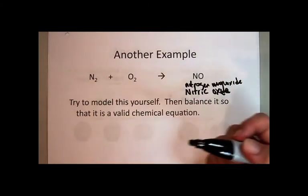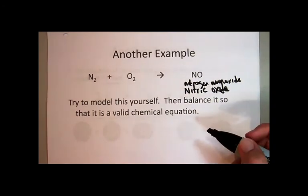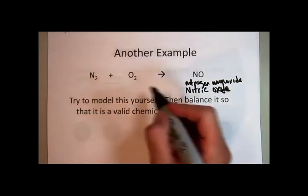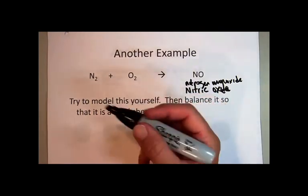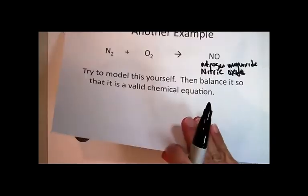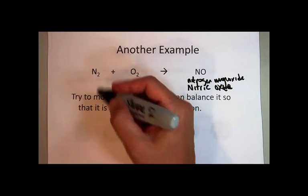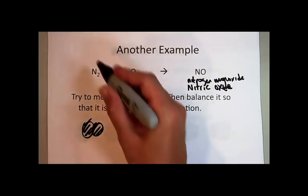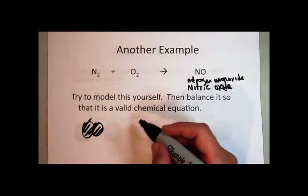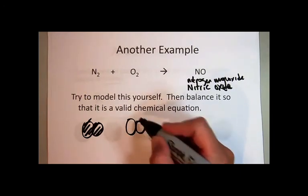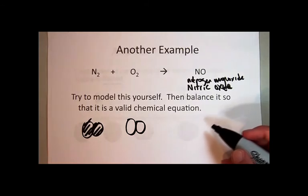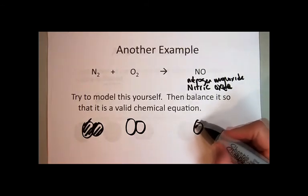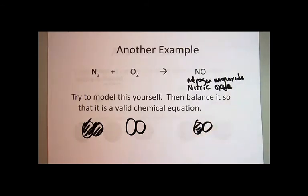So after you've tried it with your classmates, if you model it first as is, you can say, I have two atoms of nitrogen chemically combined to give me molecular nitrogen, two atoms of oxygen chemically combined to give me a molecule of oxygen, and then I've got the nitrogen and oxygen combined to give nitrogen monoxide.